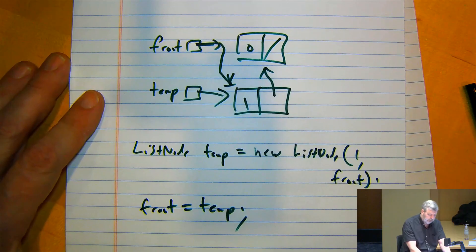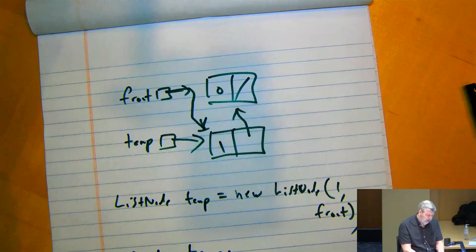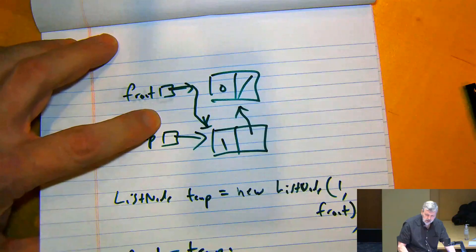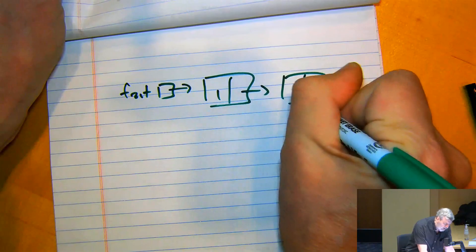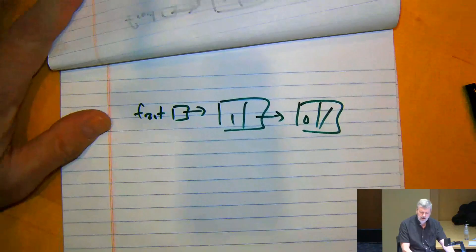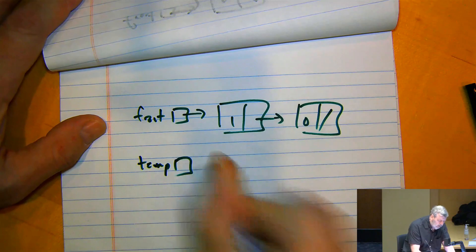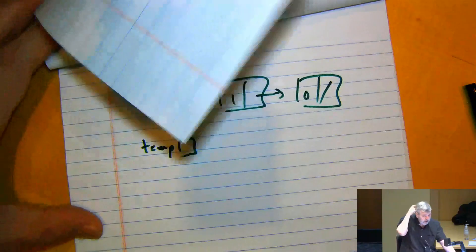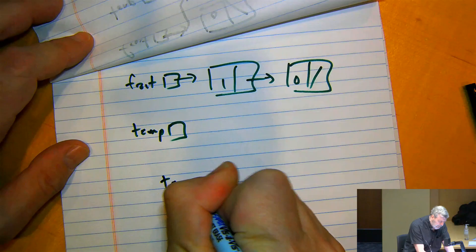The pictures we draw of nodes in memory are fairly arbitrary — we don't know where they're stored. After reassigning front, we'd redraw it so front points at a node with one, which points at a node with zero, null-terminated. Temp is still pointing at the node with one, but I don't care because I've already used that reference. We're going to reassign temp right away — set temp to a new ListNode storing two, with its next link being front.